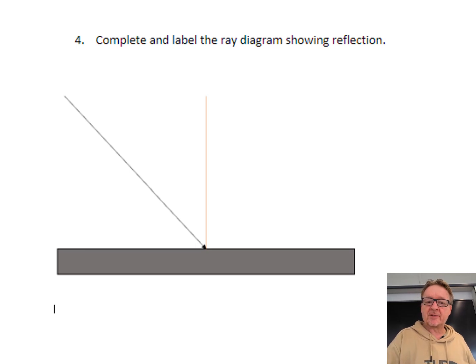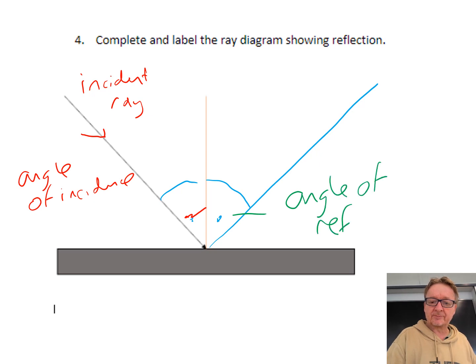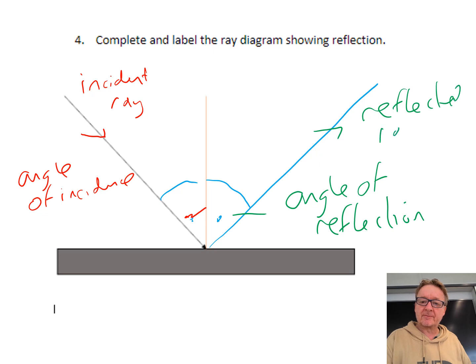Complete and label the ray diagram showing reflection. You get a ruler, and that angle and that angle should be exactly the same. This one is called the angle of incidence, and this here is the incident ray. This one is the angle of reflection, and this is the reflected ray. This line is the normal, which is 90 degrees to the mirror, and this is then a mirror.